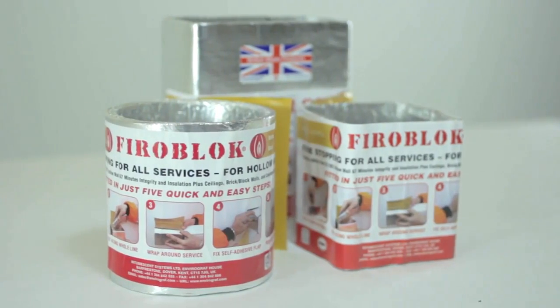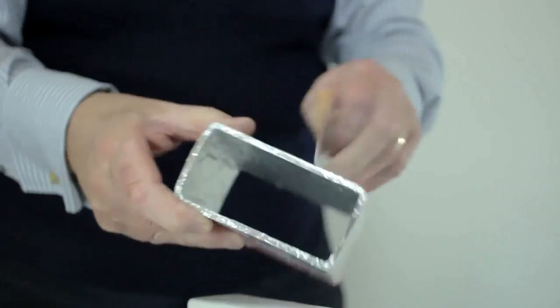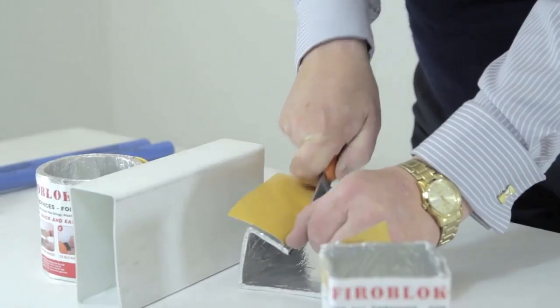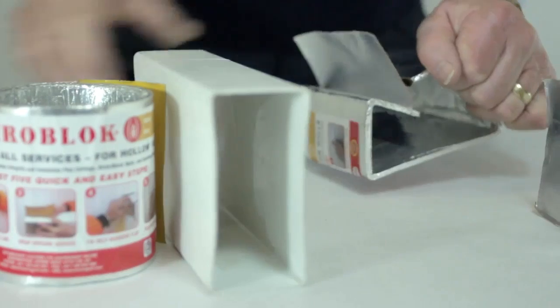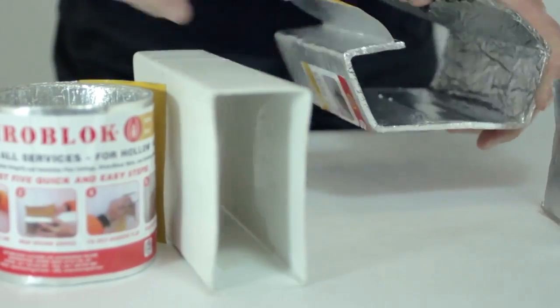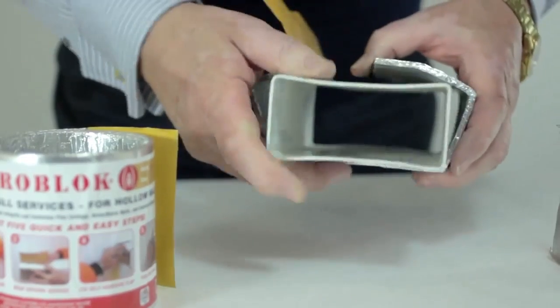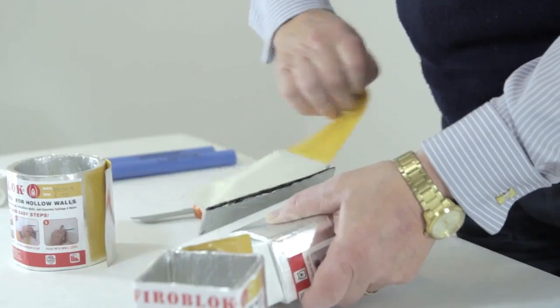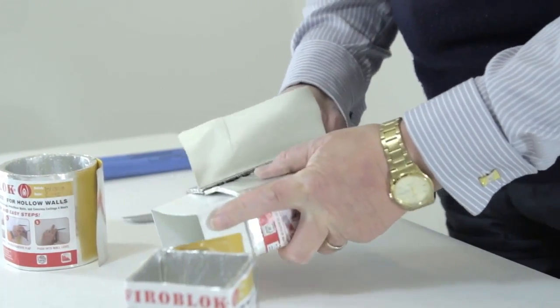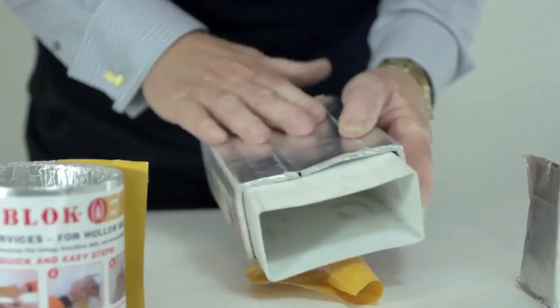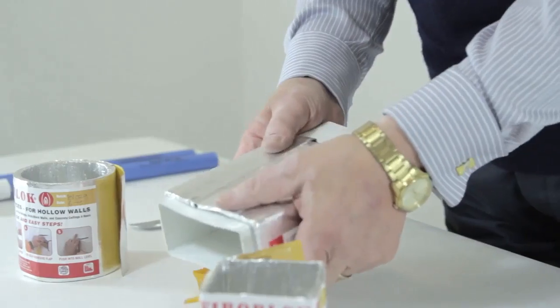Next up is our PhyroBlock Intumescent Sleeve in action. The PhyroBlock is easily installed and is designed to be retrofitted if needed. Simply cut through the back of the sleeve and place around the trunking. A self-adhesive tag is then peeled back in order to rejoin the cut. The finished product is then simply placed into the wall flush on each side.